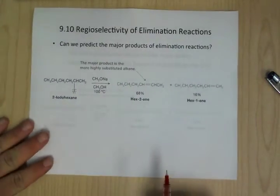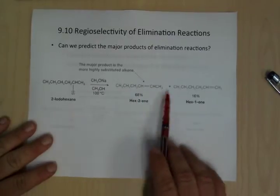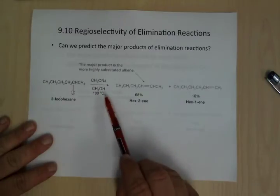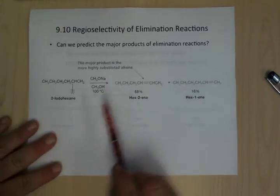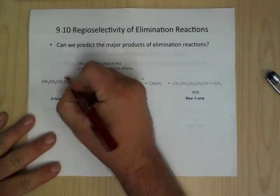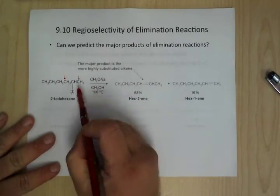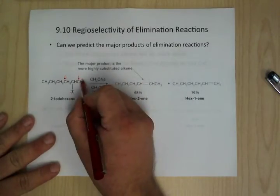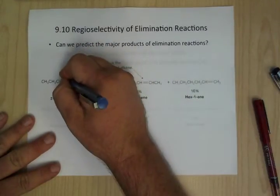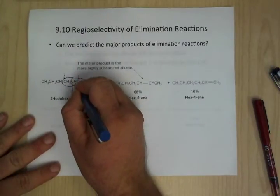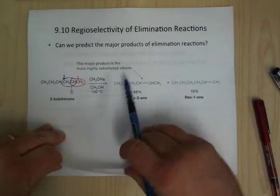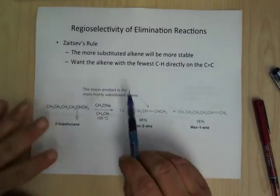We've talked about elimination reactions before. You can look on either side of your leaving group, and if there are hydrogens, you can make a double bond on that side. There is a preference for which side you form the double bond — that's called Zaitsev's rule. Technically, the more substituted alkene will be the more stable product.